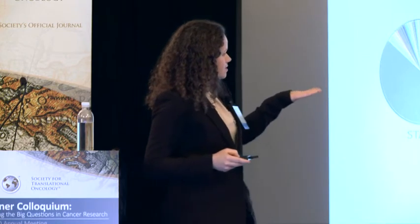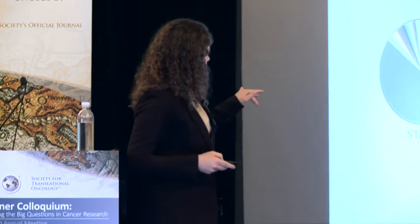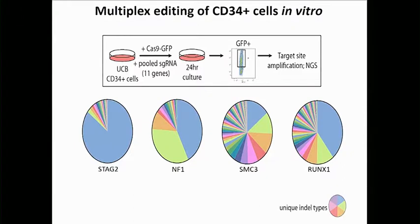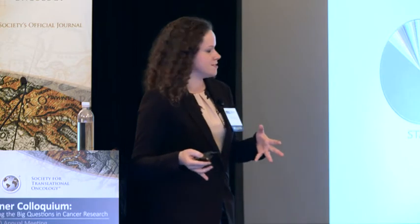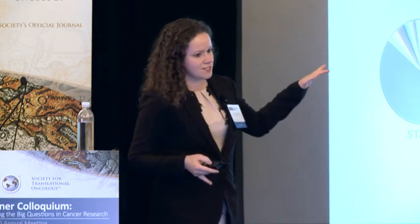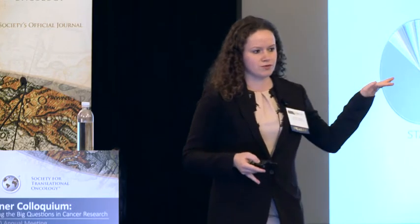Because I'll be using these pie charts for the remainder of my talk, let me spend a couple of minutes on them. Every single color in these pie charts represents a unique insertion or deletion that is unique in terms of its genomic location, its quality, whether it's a deletion or insertion, and its size. Some guides — such as STAG2 in this case — give you a very homogeneous population of cells where the double-strand break is repaired in one particular way, whereas guides for other genes can create a really nice heterogeneity of indels. This heterogeneity of indels is something we will be using as genetic barcodes as we follow these cells over time after transplantation.